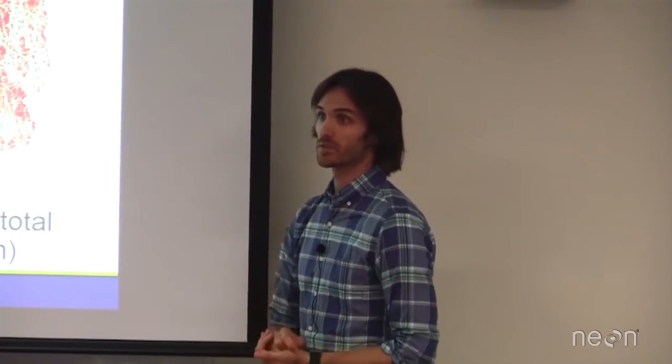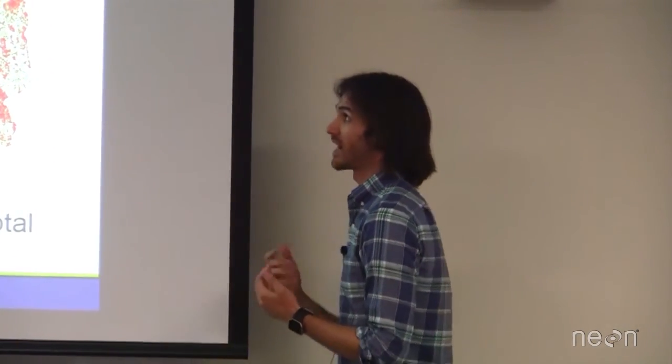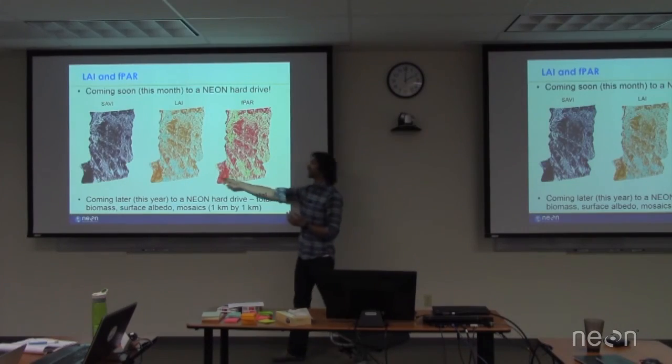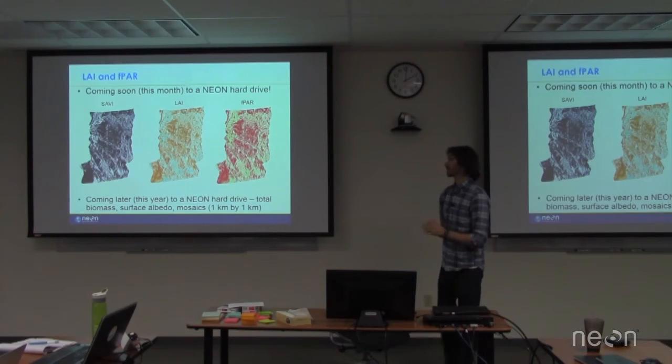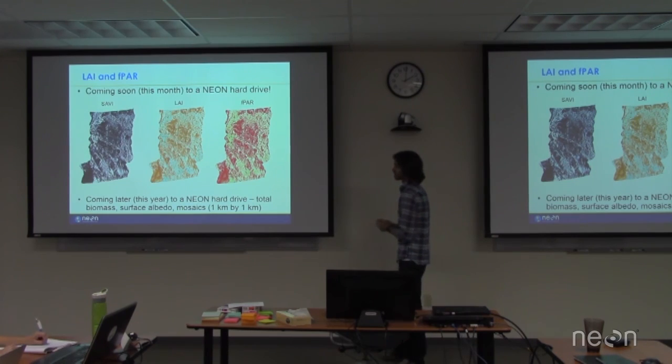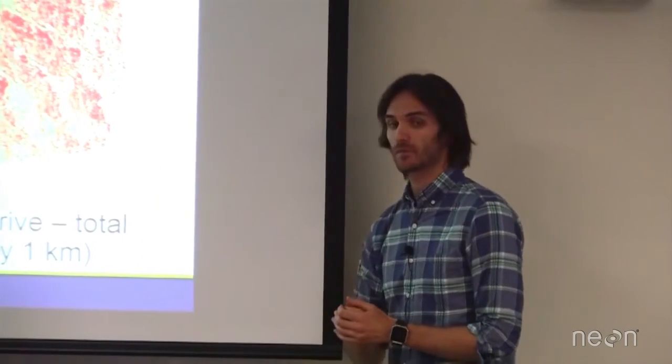So coming soon. We don't have it yet. We added an additional vegetation index, which is the Soil Adjusted Vegetation Index, or SAVI. We added that because we used that one to create our LAI and F-PAR product. And so soon, probably this month, we'll be starting to distribute SAVI, LAI, and F-PAR all from the spectrometer. Coming later, which is this year, is total biomass derived from the spectrometer as well as surface albedo. And then, we're going to mosaic all of these products into one kilometer by one kilometer tiles.